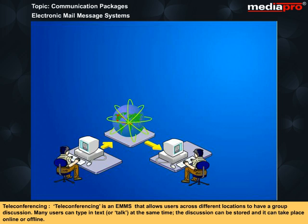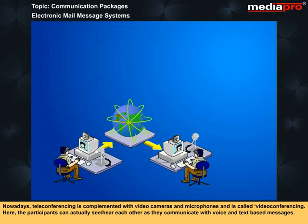Teleconferencing is an EMMS that allows users across different locations to have a group discussion. Many users can type in text or talk at the same time. The discussion can be stored and it can take place online or offline. Nowadays, teleconferencing is complemented with video cameras and microphones and is called video conferencing. Here, the participants can actually see or hear each other as they communicate with voice and text-based messages.